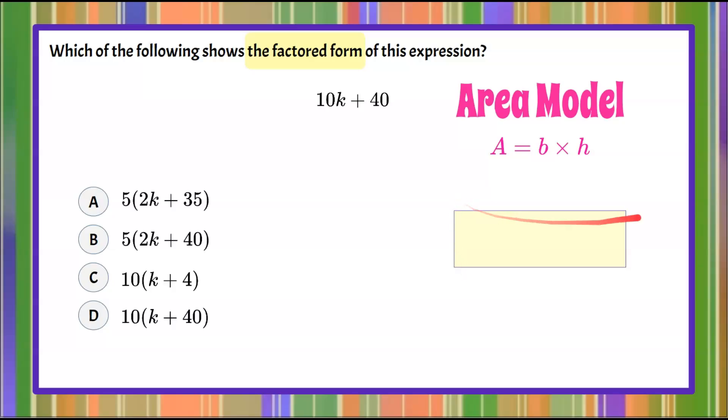So side times side equals the area. To do this area model, we're going to assume that this 10k plus 40 represents the area of the rectangle. Now when we look at this expression,